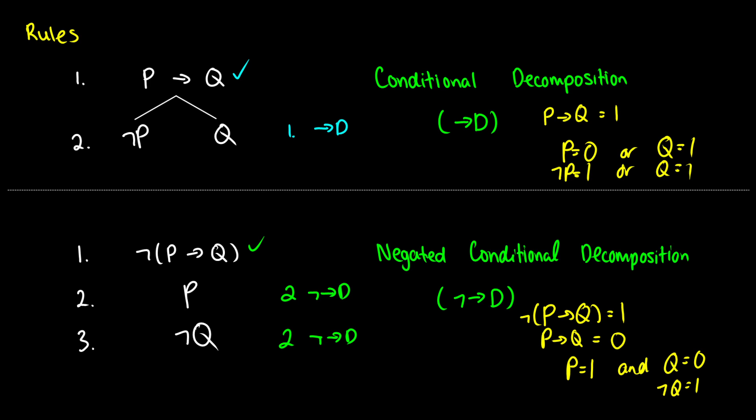Remember, when we break things up, we're just getting them from the definition of truth. P is true — that's the same as P. Not Q is true — that's the same as not Q. So those are our rules for the conditional.